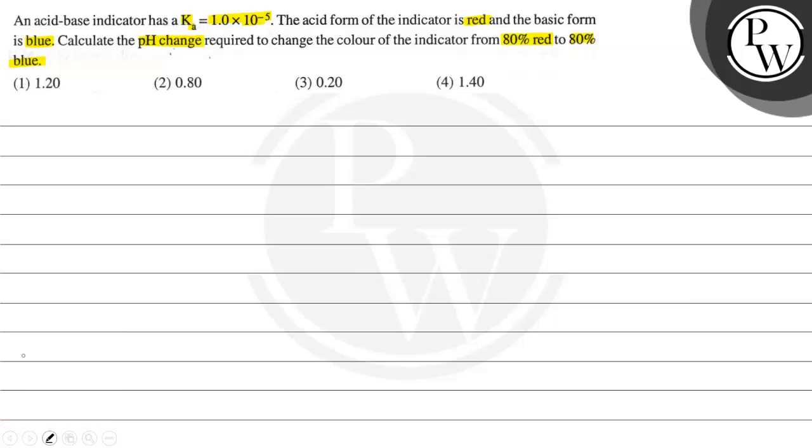The key concept is theory of indicators. The indicator is given that this is red in the acidic form and blue in the basic form.